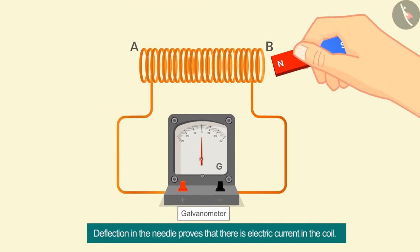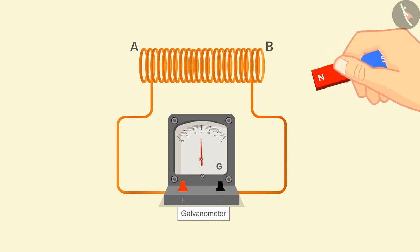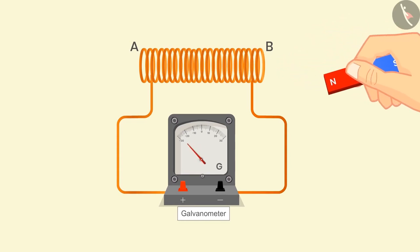The deflection in the needle proves that there is electric current in the coil. This needle comes back to zero as soon as the motion of the magnet stops. In the same way, if we withdraw the north pole away from the coil, then deflection in the opposite side can be seen.